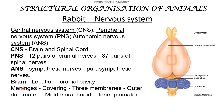Now let's look at the brain. Where is the brain located? In the cranial cavity. Cranium means skull, and the cavity inside the skull is where the brain is located. That space inside the skull is called the cranial cavity.